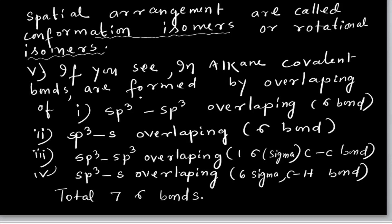In alkane, covalent bonds are formed. The covalent bond is a sigma bond formed by sp3–sp3 overlapping and sp3–s overlapping. Why are they called conformational isomers or rotational isomers? Because the single covalent bond between carbon atoms can rotate, and even a very small rotation gives an infinite number of structures in space.